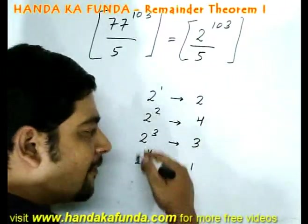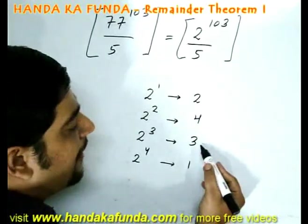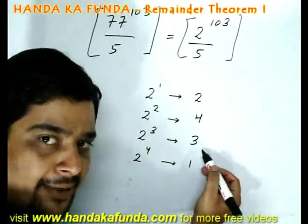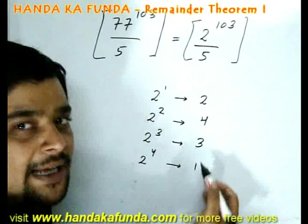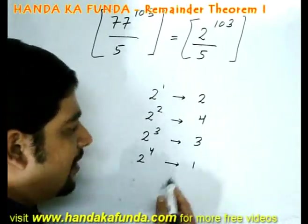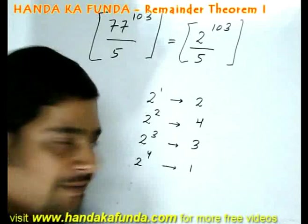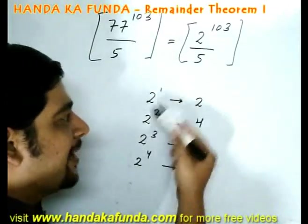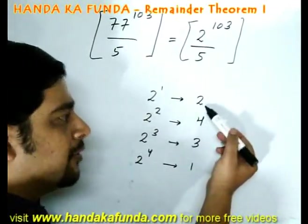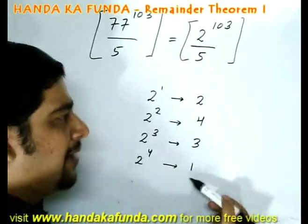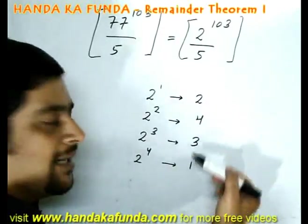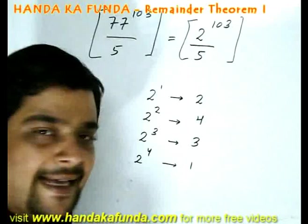I can also, instead of calculating the entire value, just multiply the last result. Last result is 3, 3 into 2 is 6, remainder gives me 1. What will be the remainder for 2 to the power of 5? It will again be 1 into 2, which is 2, then 4, then 3, then 1, then 2, then 4, then 3, then 1. We have formed a cycle of 4.